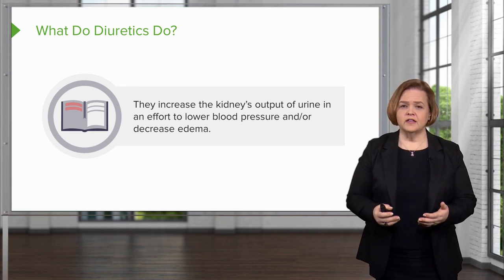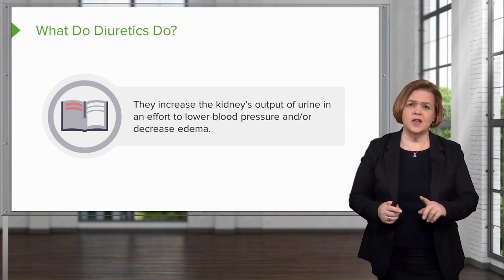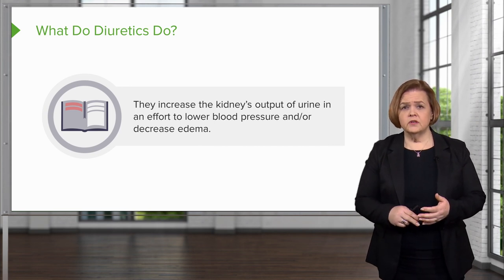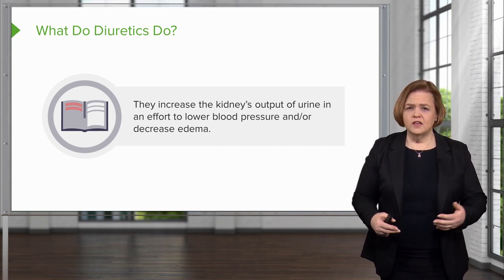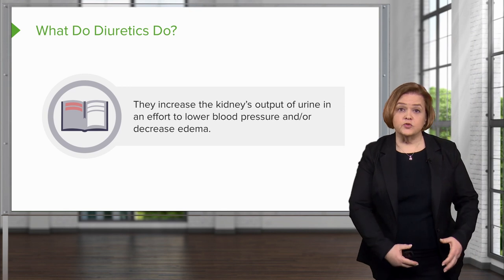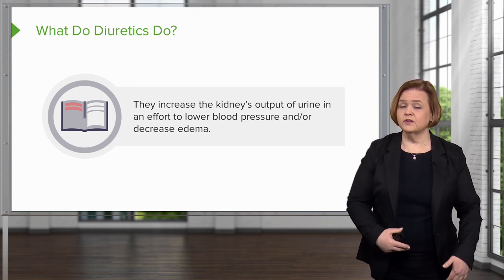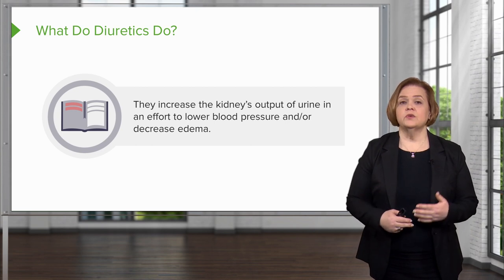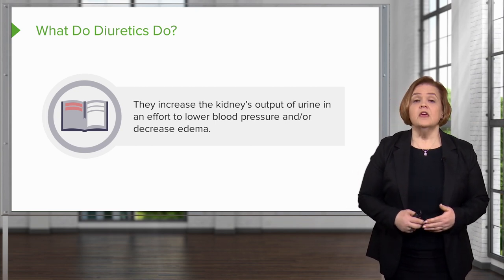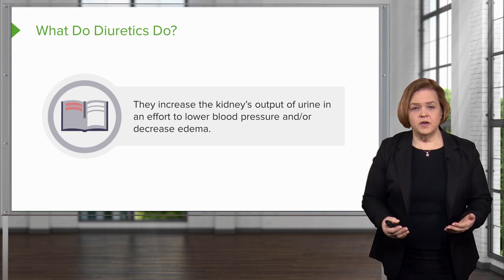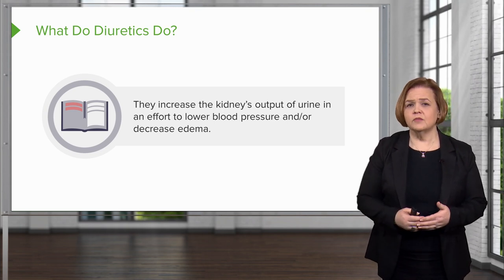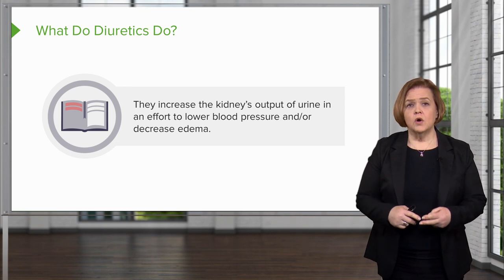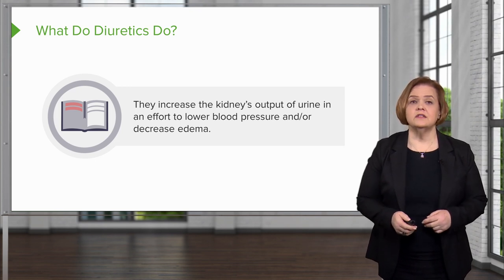Also, if a patient has edema, that's a way of saying that fluid is not where we want it to be — they've got too much fluid or it's shifting into their tissues. A simple example is someone with swollen ankles or pitting edema on their shins. We give diuretics to patients with elevated blood pressure or to decrease edema.